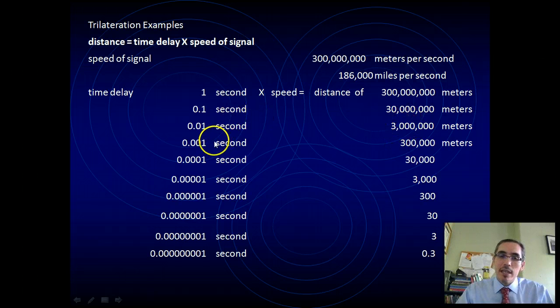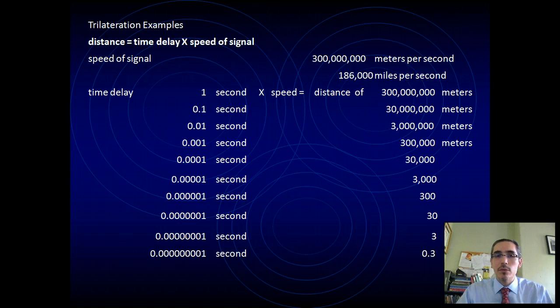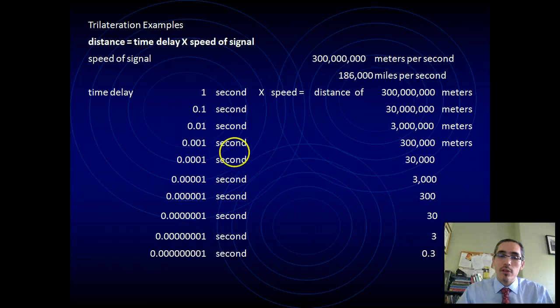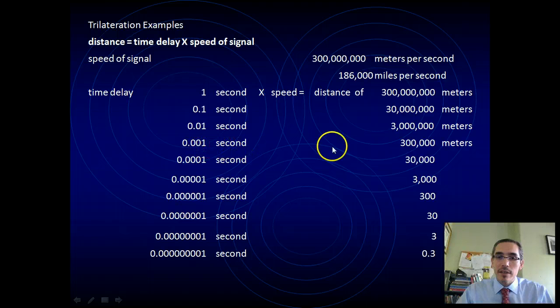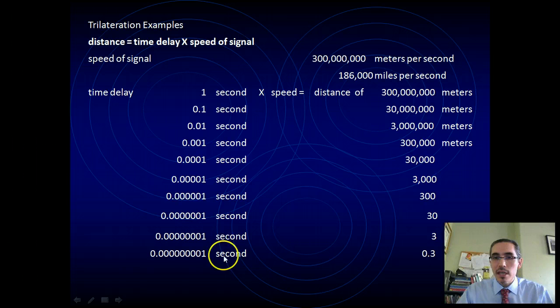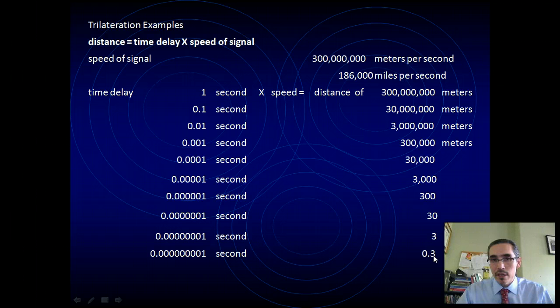It turns out that if we can get our time measurement down to really high precision, we can actually record distances down to manageable lengths. So if you're looking at this chart here, a hundredth of a second, you're down to 3 million meters, a thousandth of a second, you're down to 300,000, and you keep going down to ten thousandth, a hundred thousandth, a millionth, ten millionth, a hundred millionth of a second. Then if you can measure time down to a billionth of a second, you can actually measure distances down to a third of a meter, about a foot. That means you could know your position within about a foot of its true location.